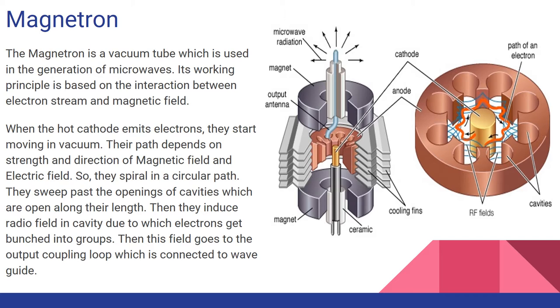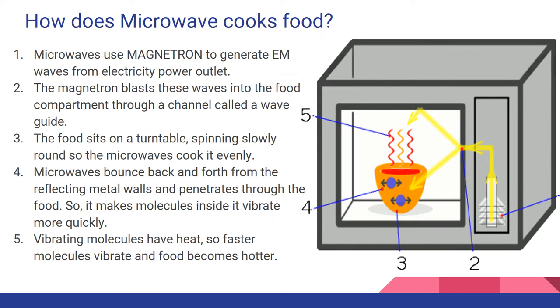When the hot cathode emits electrons, they start moving in a vacuum. Their path is mainly decided by magnetic and electric fields present. These electrons move in a circular path and sweep past these opening cavities. These cavities resonate at a particular frequency which is the required microwave frequency. So the generated microwaves by electrons go to the food chamber. Now let us see how microwave cooks food.